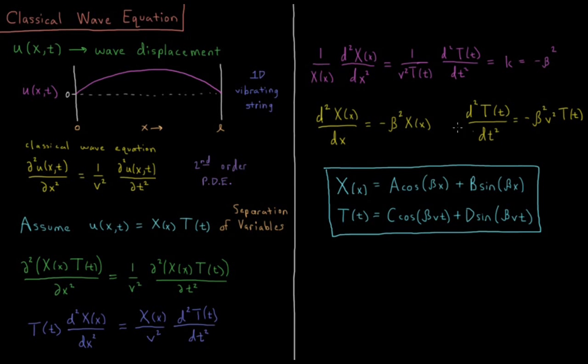Whenever you have a situation like this, where the second derivative of a function equals a negative constant squared times itself, the solution to each of those is going to be sines and cosines.